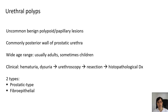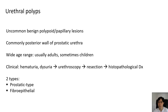Urethral polyps are uncommon benign polypoid or papillary lesions. They commonly occur on the posterior wall of the prostatic urethra in men. They affect patients on a wide age range — usually adults, but they can sometimes be seen in children, so they're not completely out of the diagnostic picture if you get a case of a polypoid lesion in the urethra of a child.